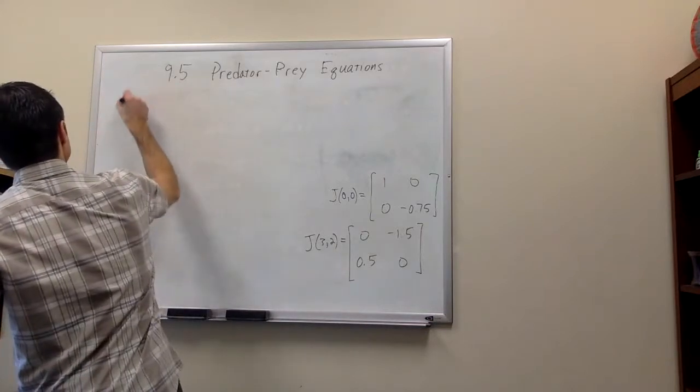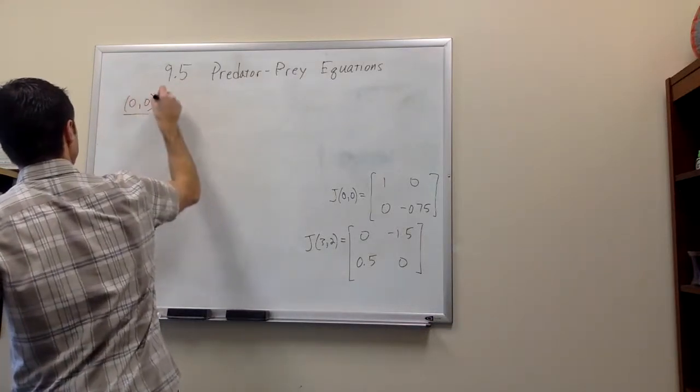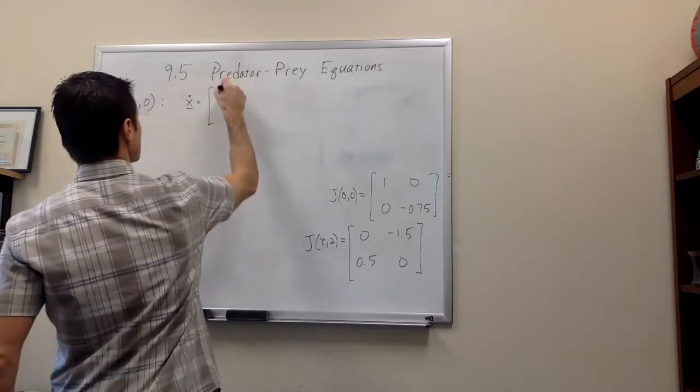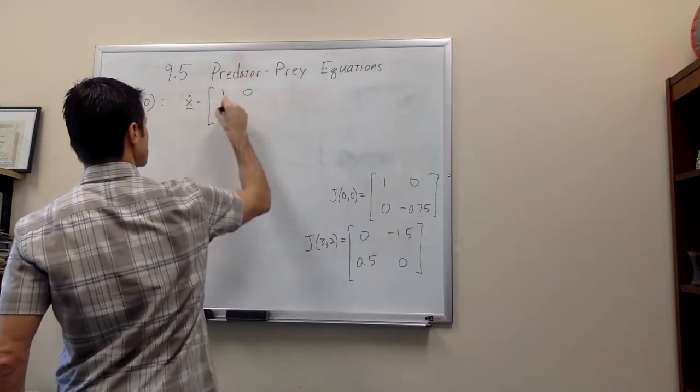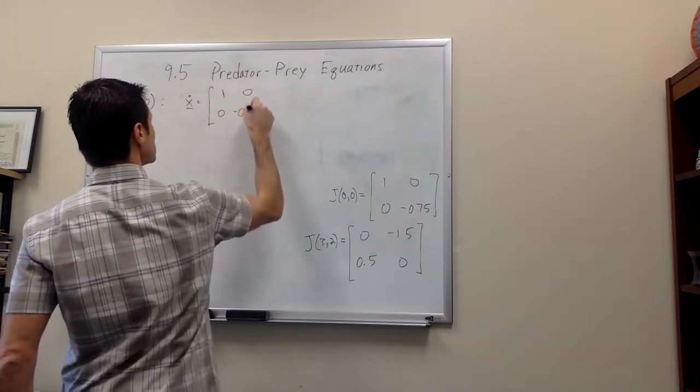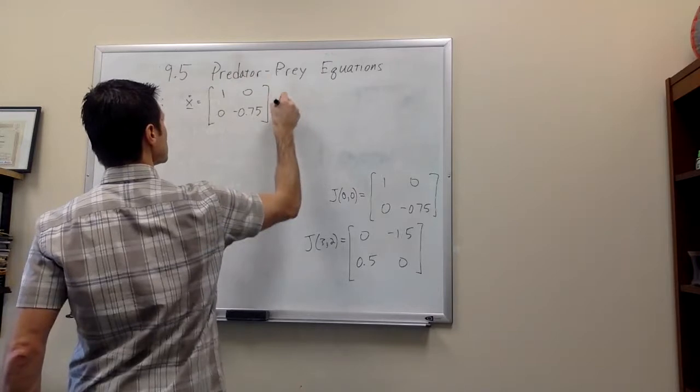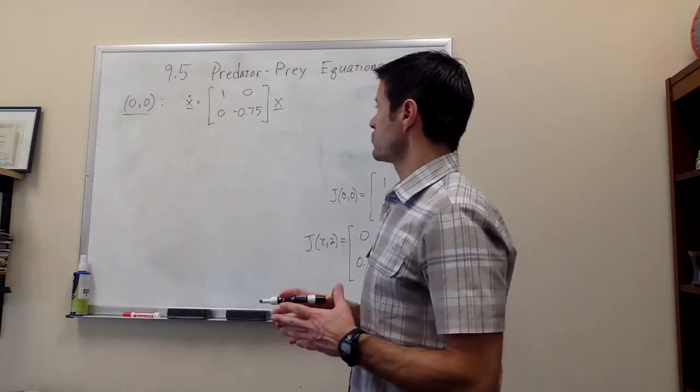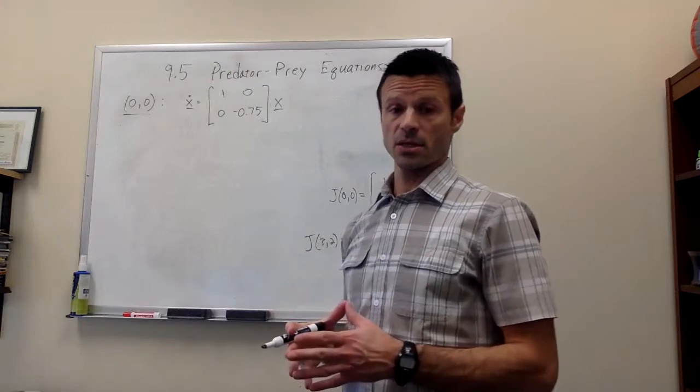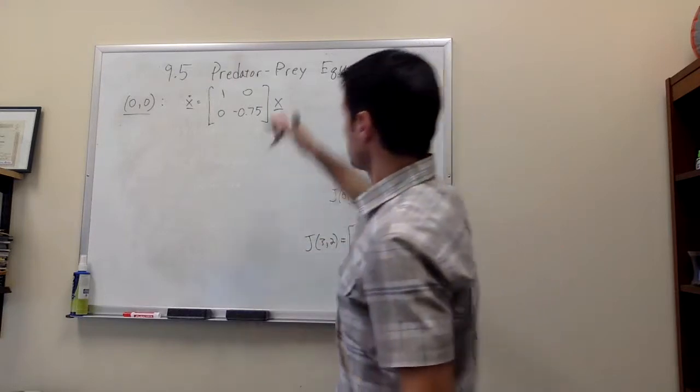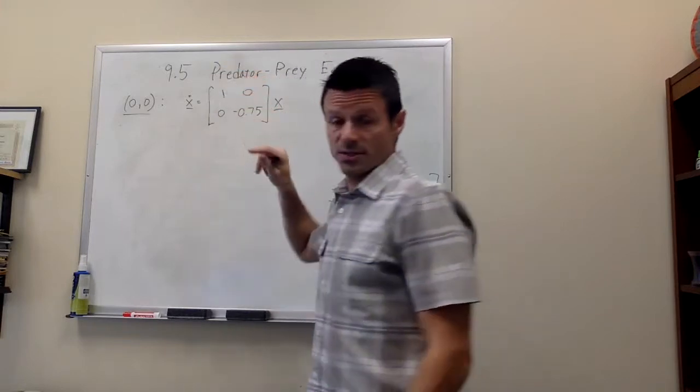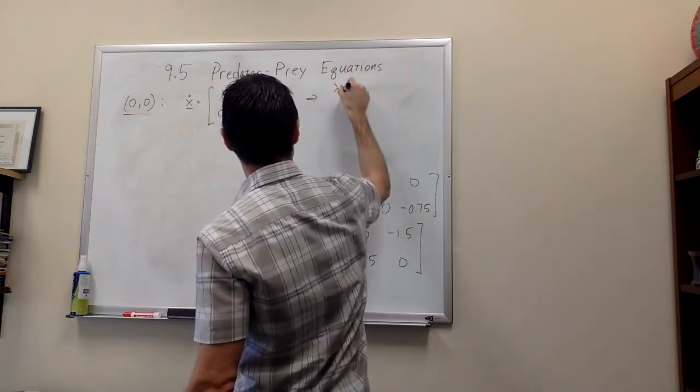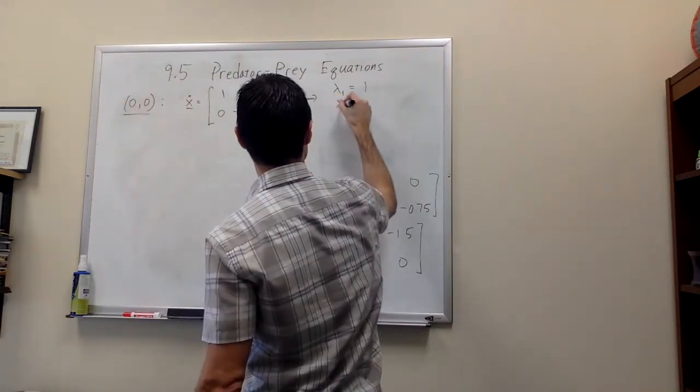So for the critical point 0, 0, we want to consider the system that looks like this. And for this system, since our matrix A is diagonal, which means that only the entries on the main diagonal are nonzero, that's nice because we can write down the eigenvalues right away. The eigenvalues are listed right on the main diagonal.